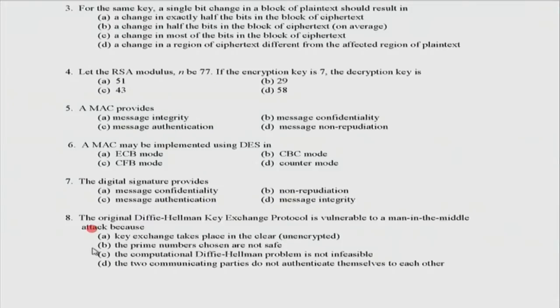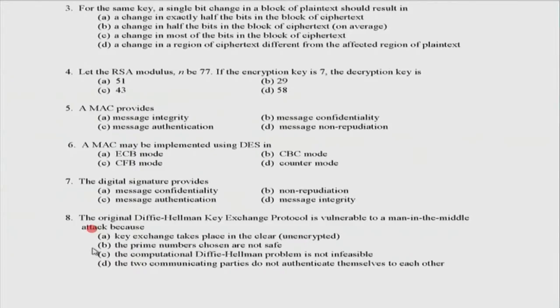The correct reason is D: the two communicating parties do not authenticate themselves or their messages to each other. The attacker in the middle took g^a mod p and substituted it with g^c mod p. Had g^a mod p been signed — authenticated by a digital signature from A — this problem would not have occurred. In the absence of a signature you cannot detect the substitution. So the problem is the absence of message authentication, and D is the most likely answer.